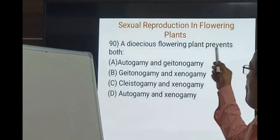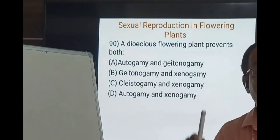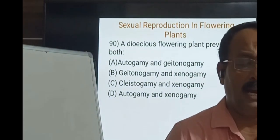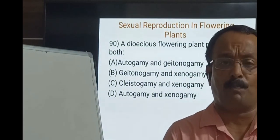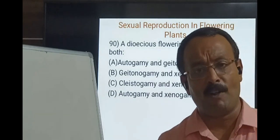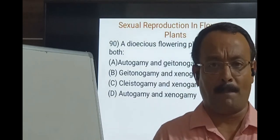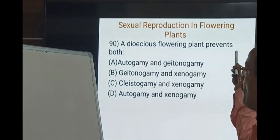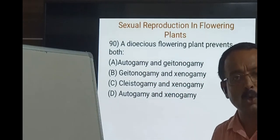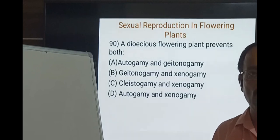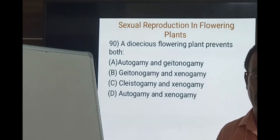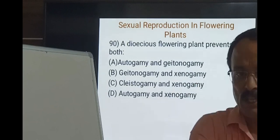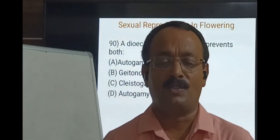Question 90: A dioecious flowering plant prevents both autogamy and geitonogamy. In dioecious plants, male flowers are produced on one plant and female flowers on another — as seen in papaya and date palms. So the only type of pollination that occurs in dioecious plants is xenogamy.